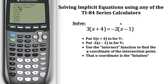Now I'm going to take the right-hand side of that equation, and I'm going to enter that into Y sub 2. So I will have negative 2 parentheses x minus 1.